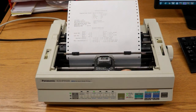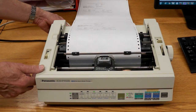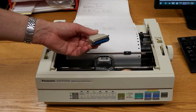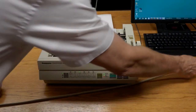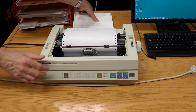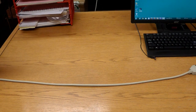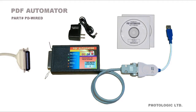Disconnect the parallel print cable and remove the printer. Replace the printer with PDF Automator, wired version.